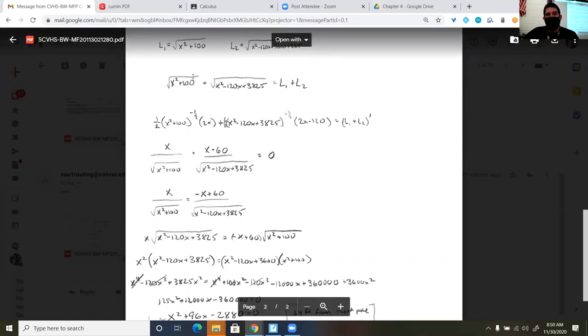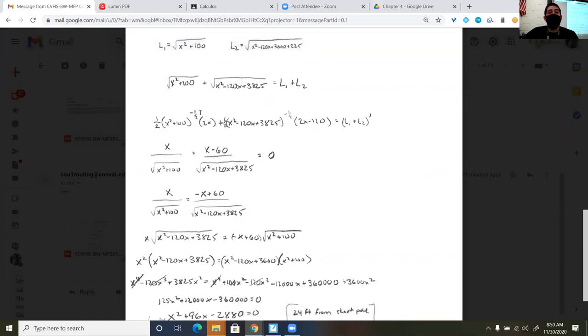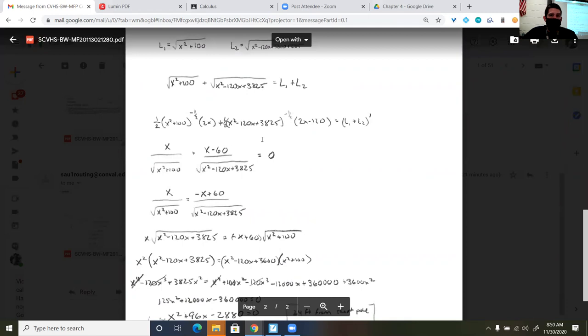So again, this has an exponent of 1 half. So I brought the 1 half down, subtracted 1, remembered the chain rule. And then here, 1 half, subtracted 1, remembered the chain rule.